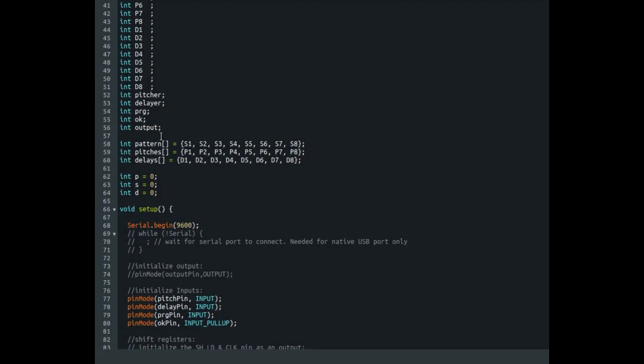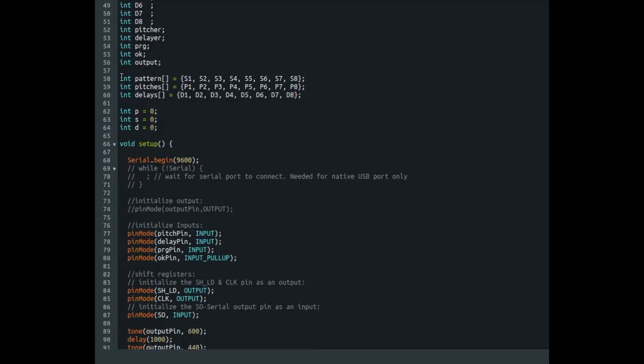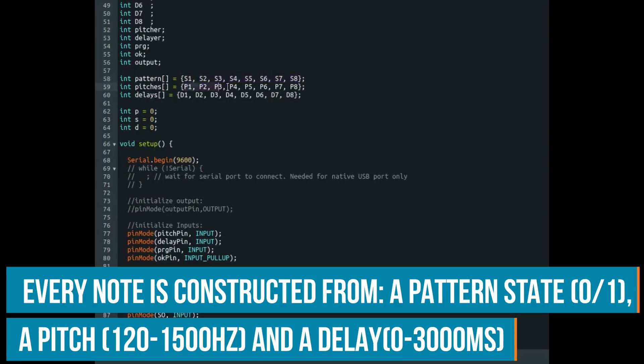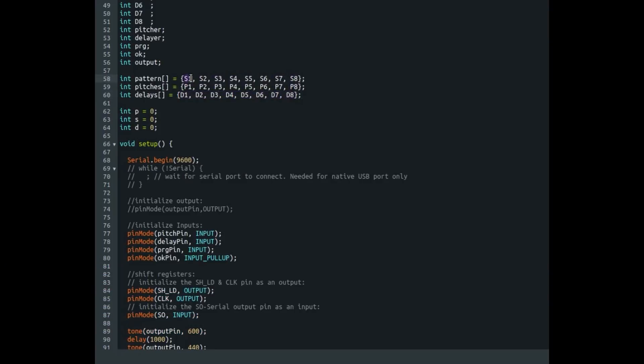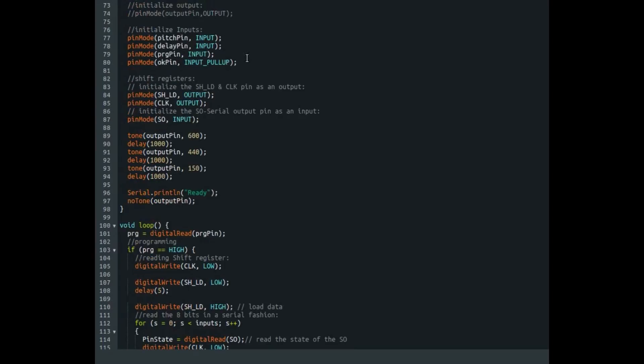A lot of variables for all the stuff that we want to do. We have these lists or arrays for the pattern. So it has a pattern for the switch states. It also has the same for the pitches that we program and also for the delays that we program. So every note that is played consists of a switch state, a pitch, and a delay. We declare all these pins.